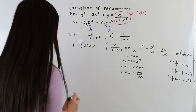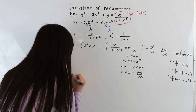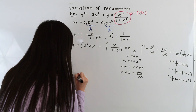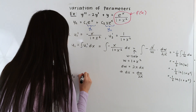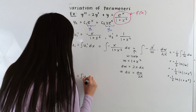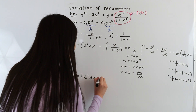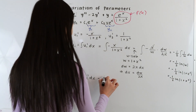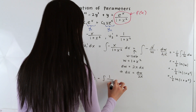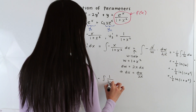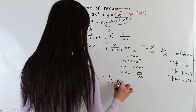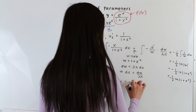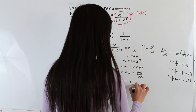For u2, we integrate u2-prime dx = ∫ 1 / (1 + x²) dx, which equals arctan(x).